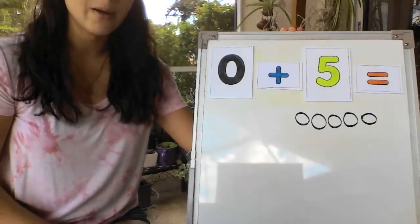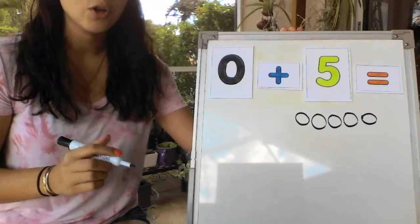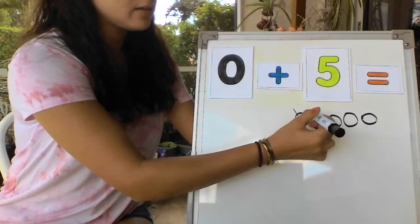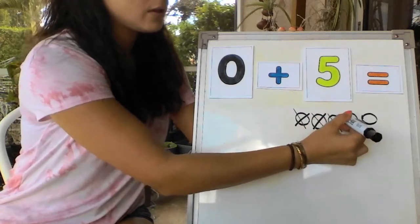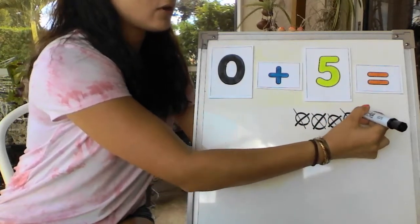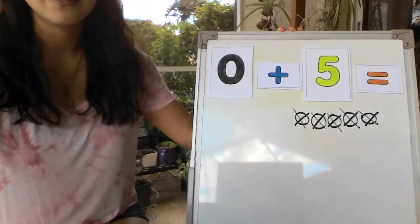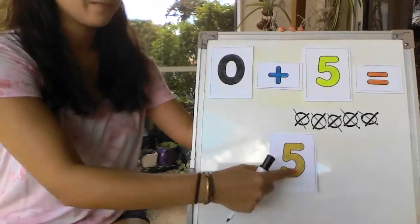Now when we count, remember we still x them out so we don't get confused. Ready? 1, 2, 3, 4, 5. So 0 plus 5 is still 5.